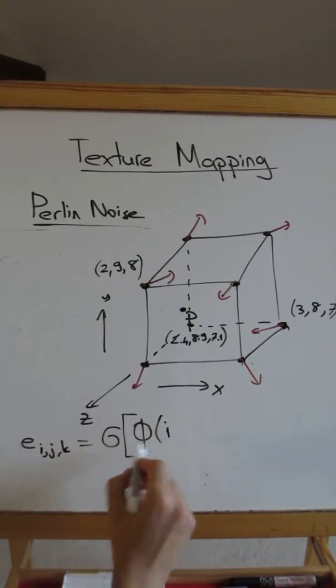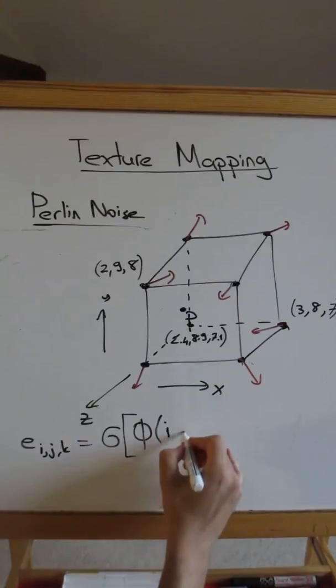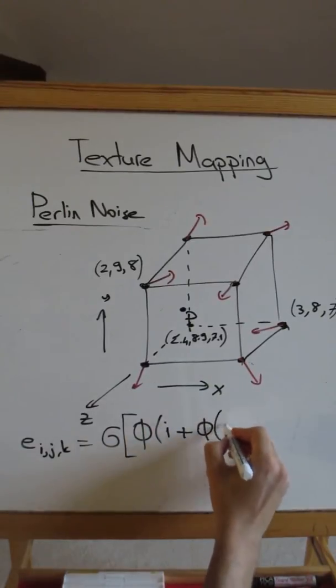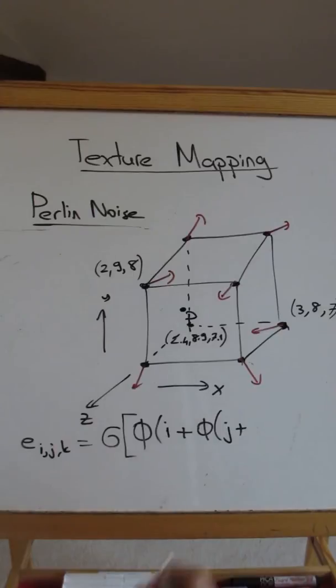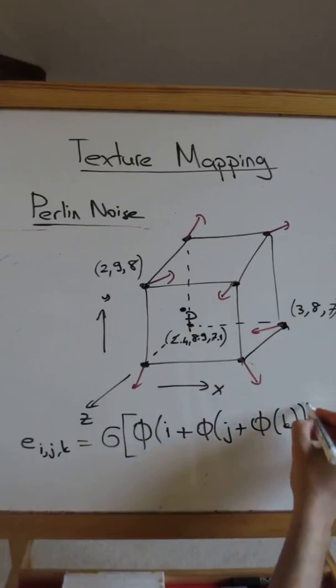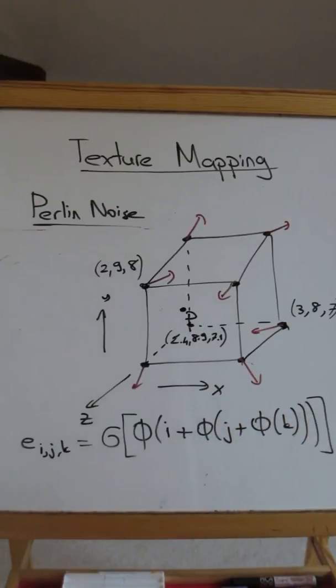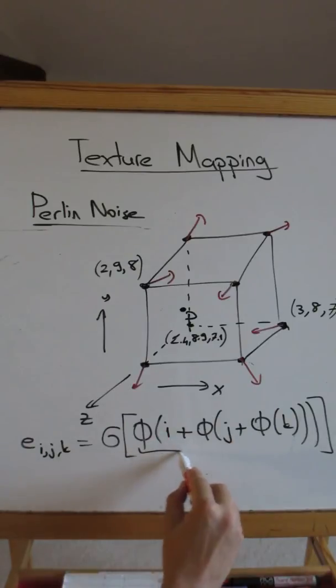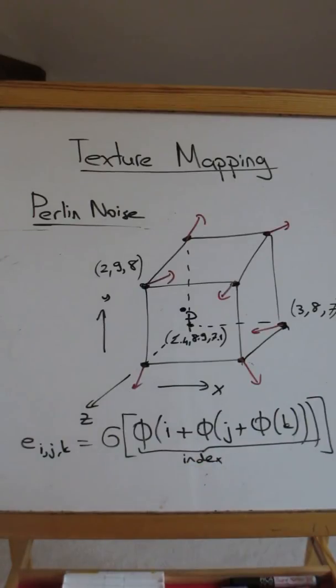We have phi i plus phi j plus phi k. So we take our i, j, k and put it into this phi function, which I will describe shortly, to compute the value, the index. So this is going to be an index into the edge vector table, the gradient vector table.